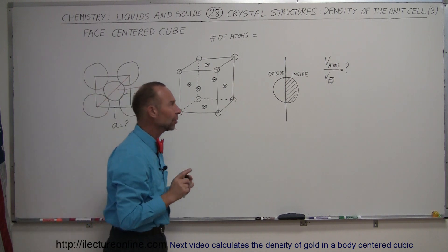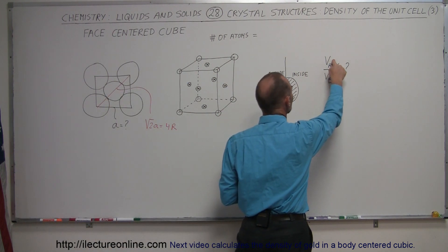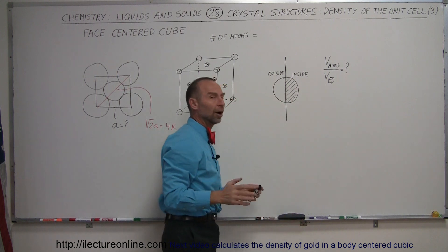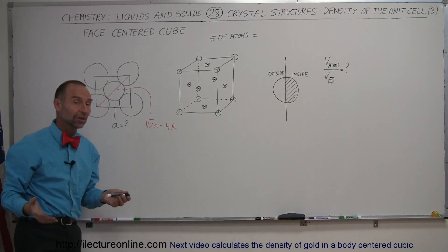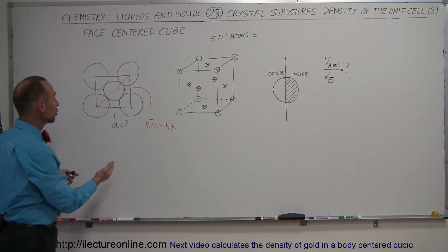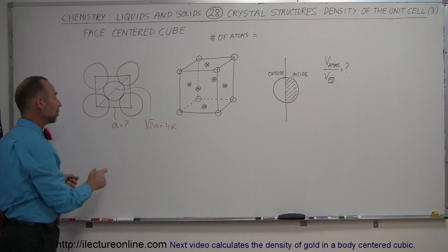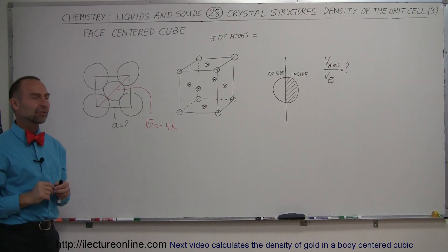Now we have to figure out the ratio of the volume of atoms in the cube divided by the volume of the cube. The volume of the cube is still a³, where the side length is a — but we don't know what a is yet, so we have to figure that out first.